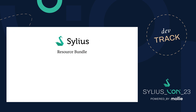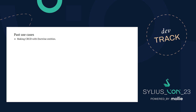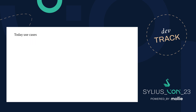Now let's continue with the main topic: the resource bundle. This is the past use case — it was originally created to make CRUD with Doctrine entities and to avoid writing controllers that all do the same thing. Now we want a better developer experience. We are not YAML developers. We want better DX. We have PHP attributes now, and we want something better for new commerce, new developers, and young people struggling with Silius technical packages.